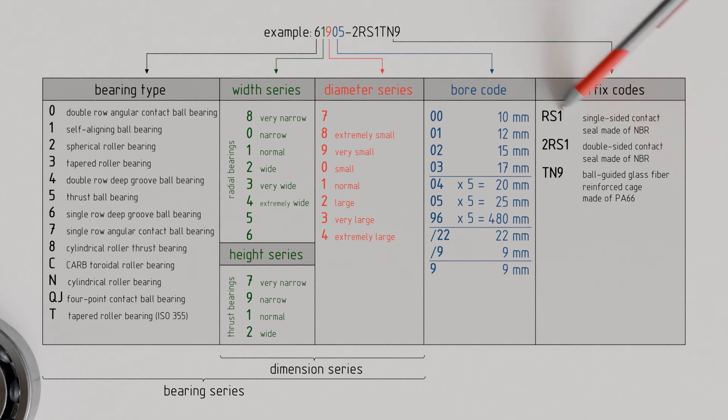Other important suffix codes relate to specifications of the internal clearance, meaning the clearance between the rolling elements and the raceway. The addition C3 in our case indicates a larger internal clearance than normal.